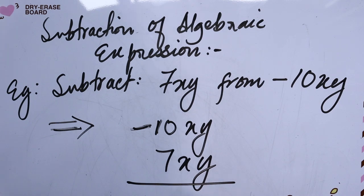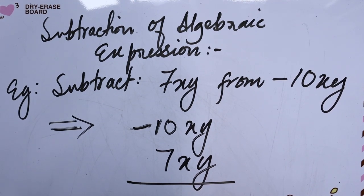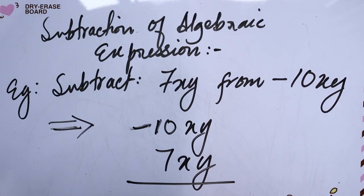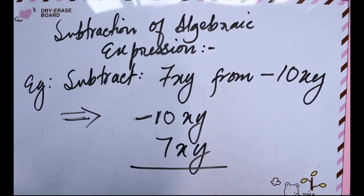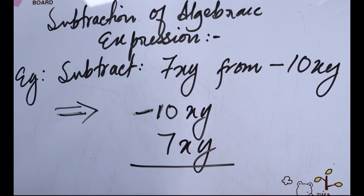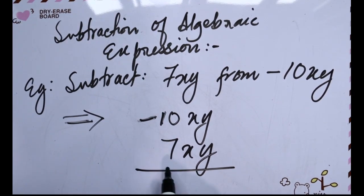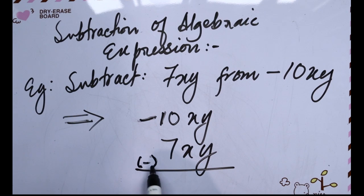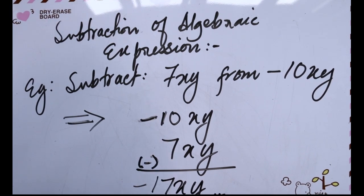Negative 10xy and 7xy. Subtraction - we have to add and assign. 7 plus, subtract minus minus plus cancel, and minus 17xy answer.